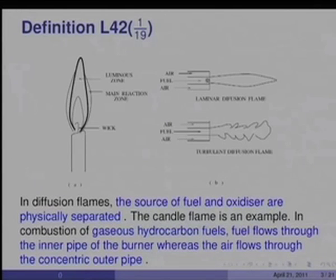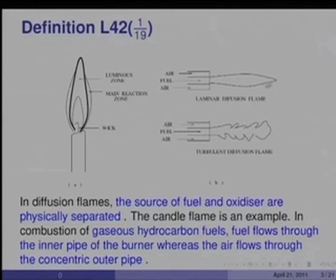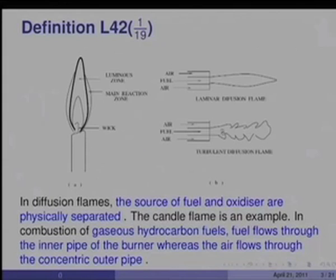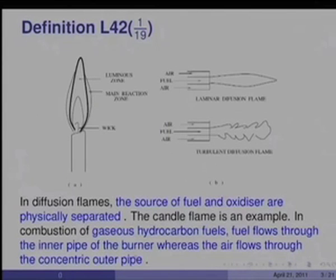Sometimes the air may also be swirled to enhance the rate of mixing. The air entrains inside the burning zone and a flame is formed. This is a typical laminar diffusion flame where the velocities are low, but if the velocities are high you get a turbulent diffusion flame with very jagged edges, unlike the laminar flame which has a nice smooth edge. This is essentially a free shear flow — there is no wall present across the thickness of the flow at all.